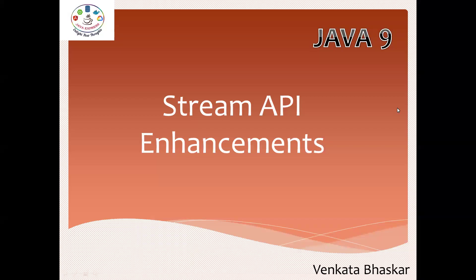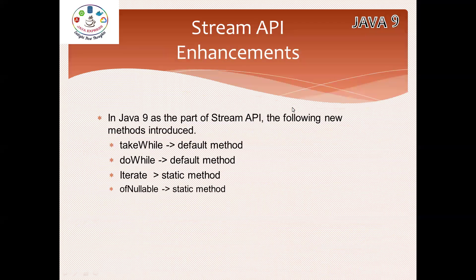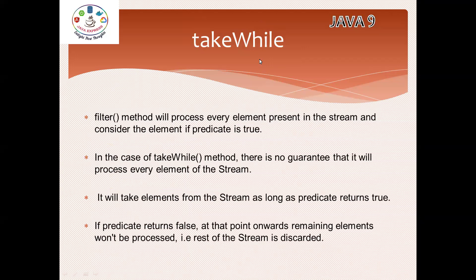Welcome to Java Express Academy. Today I'm going to explain Java 9 Stream API enhancements. A couple of new methods are introduced in Java 9. Overall, four methods are introduced: takeWhile and dropWhile are default methods, and iterate and ofNullable are static methods introduced in the Stream API enhancements.